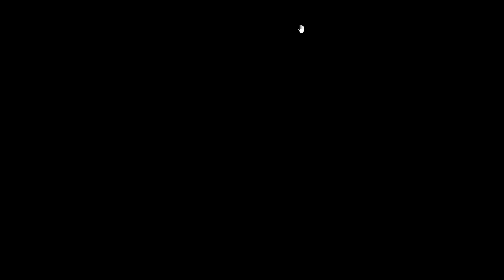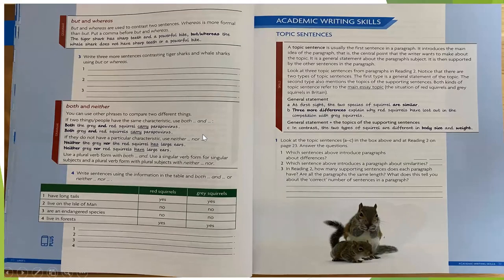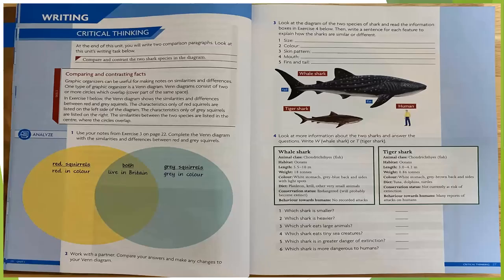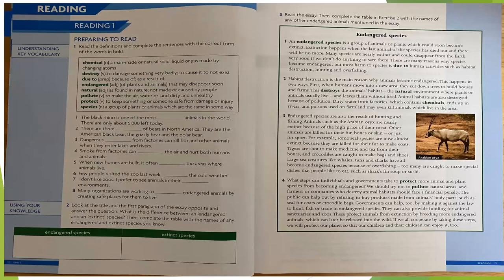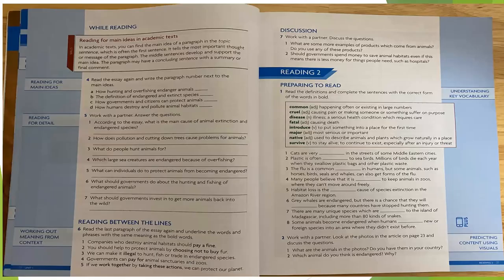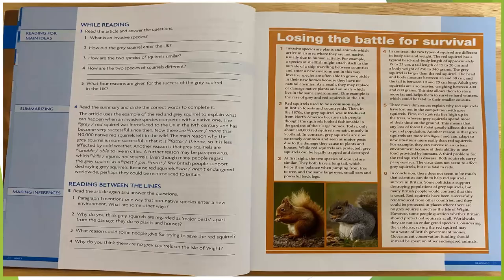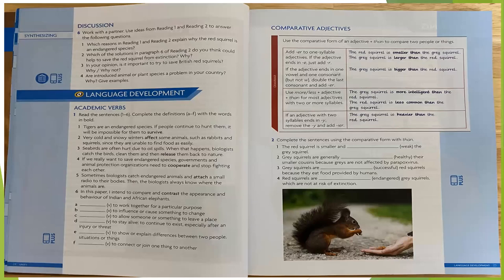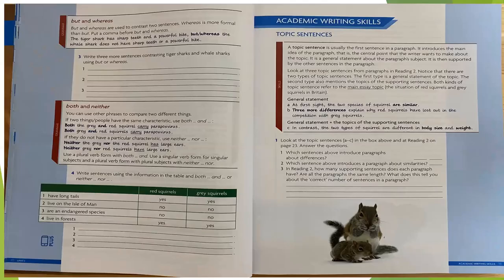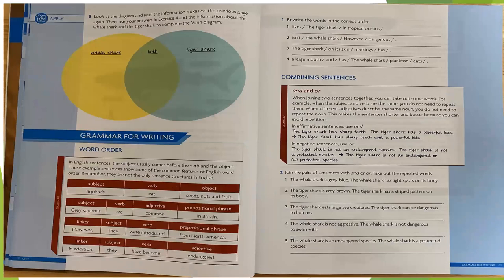I'm going through this quite quickly, but those are the pages we would study in the book. Quick review: vocabulary check on page 18, page 19 has reading one, page 20 has the questions you should answer and email to me. Then go to page 25 for comparative adjectives — fill in the answers and send them to me. And we also looked at language to combine sentences.